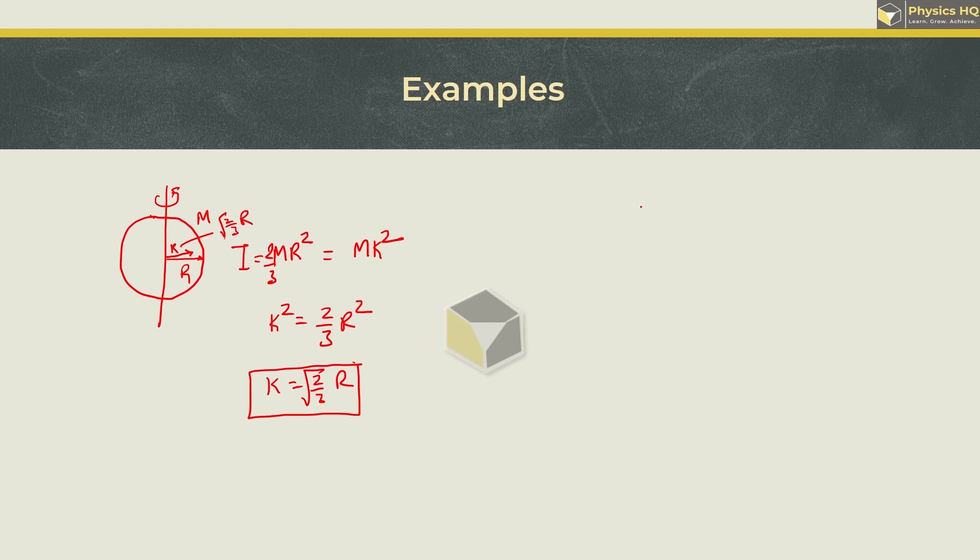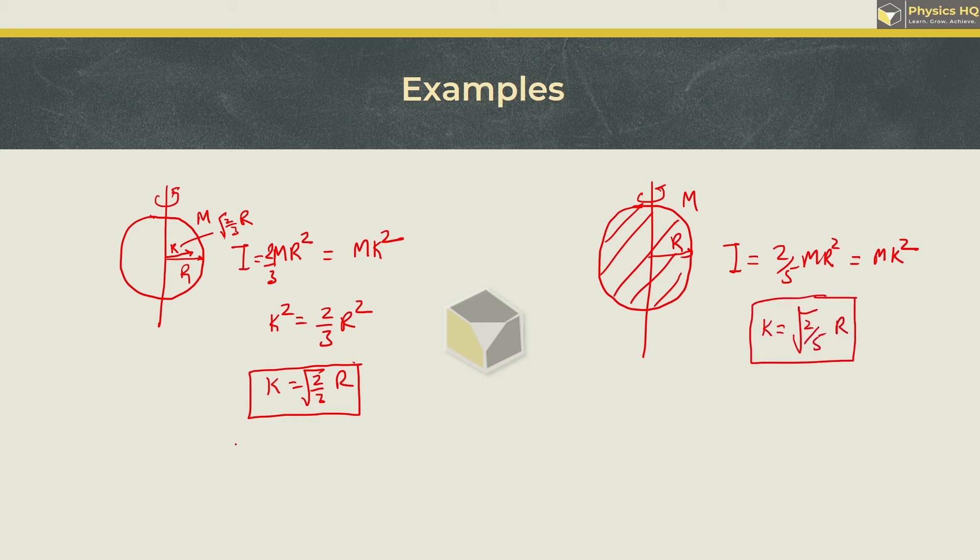Now let us talk about solid sphere. So for a solid sphere again with mass m and radius r, here the moment of inertia is given by 2 by 5 m r square, this is equal to m k square, and once again if we cancel out m and take square root we got k is equal to root of 2 by 5 r. Now when you compare this formula of hollow sphere and solid sphere, radius of gyration for a solid sphere is having a lesser value compared to radius of gyration in hollow sphere.